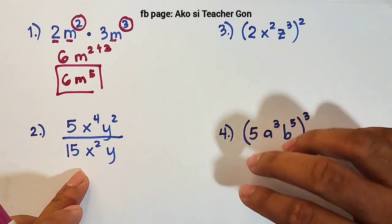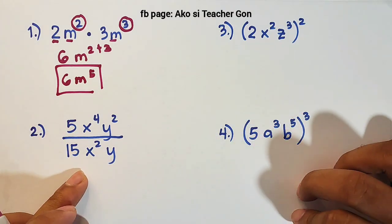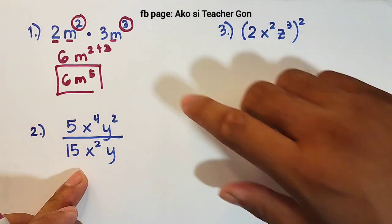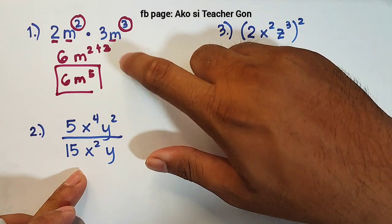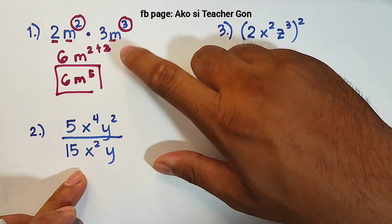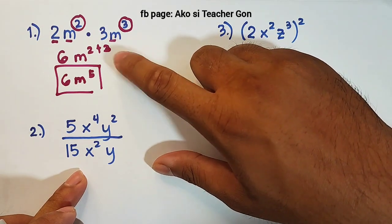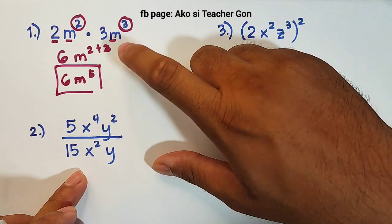Now let's move on to item number 2. By the way, in this item we applied the product rule.